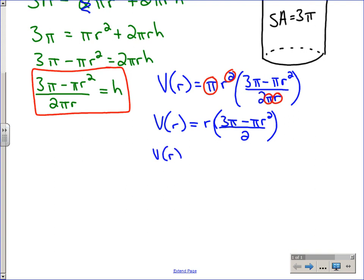Then there's 3π minus πr² over 2. I can distribute the r and split up that 2: (3/2)πr - (π/2)r³. That's my function simplified—the volume in terms of the radius.